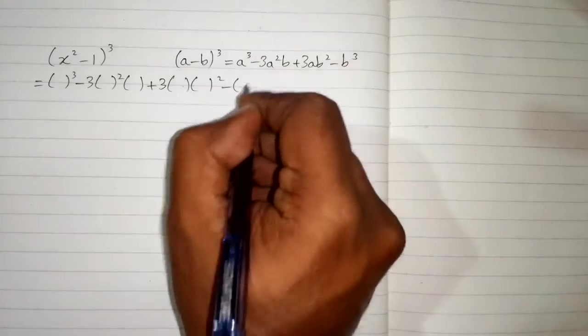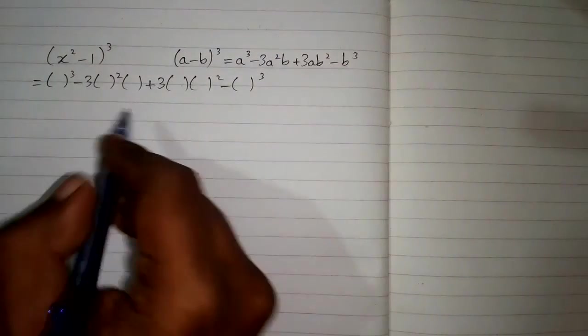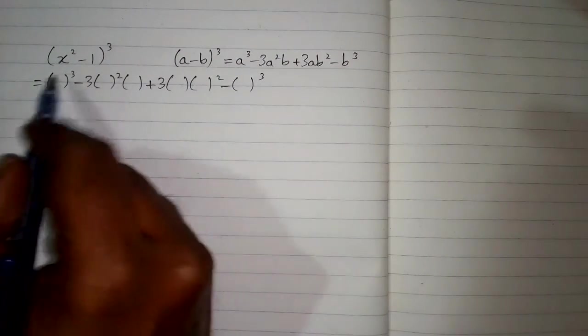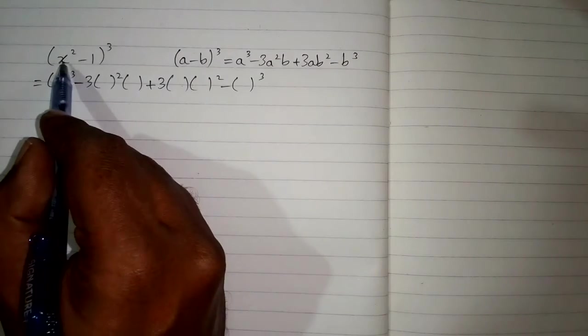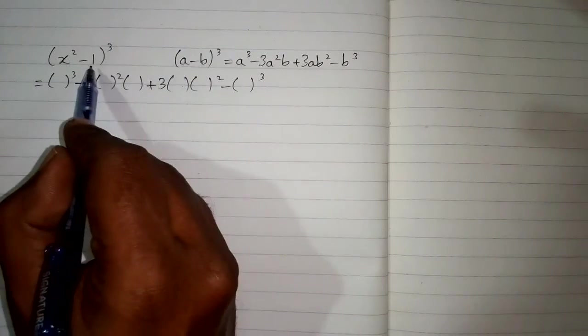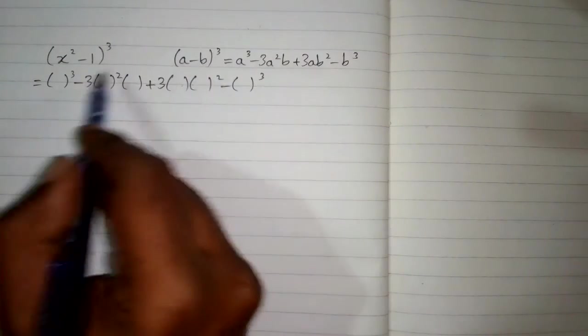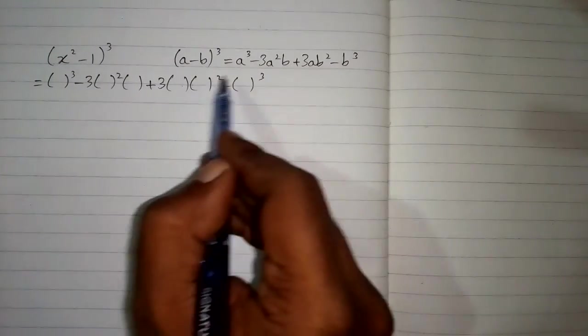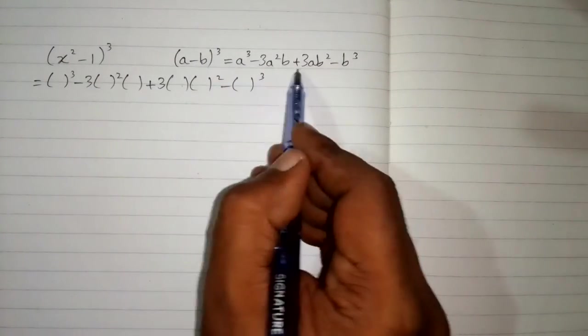Now we can see that we have x² in place of a and 1 in place of b. So we put x² in the respective places of a in this formula.